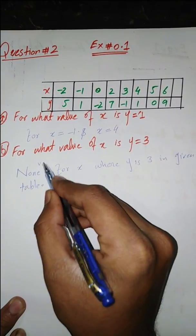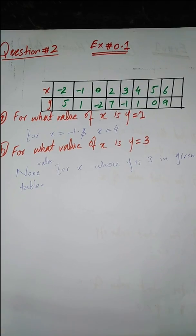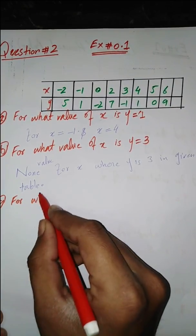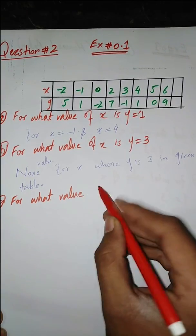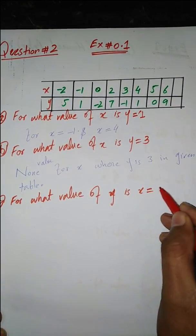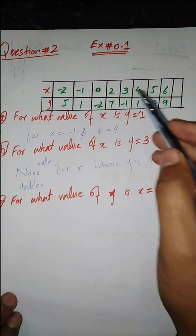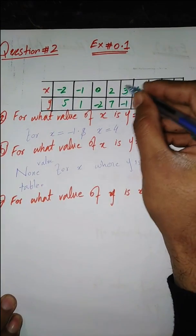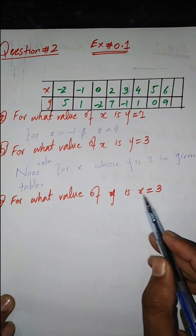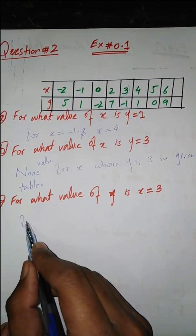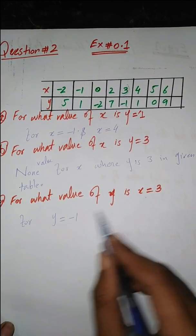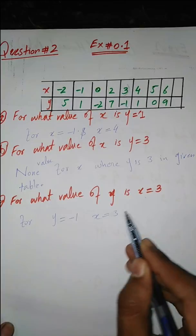Part c asks: for what value of y is x equal to 3? I look in the table for where x equals 3. When x equals 3, the value of y is minus 1. So for y equal to minus 1, x is equal to 3.